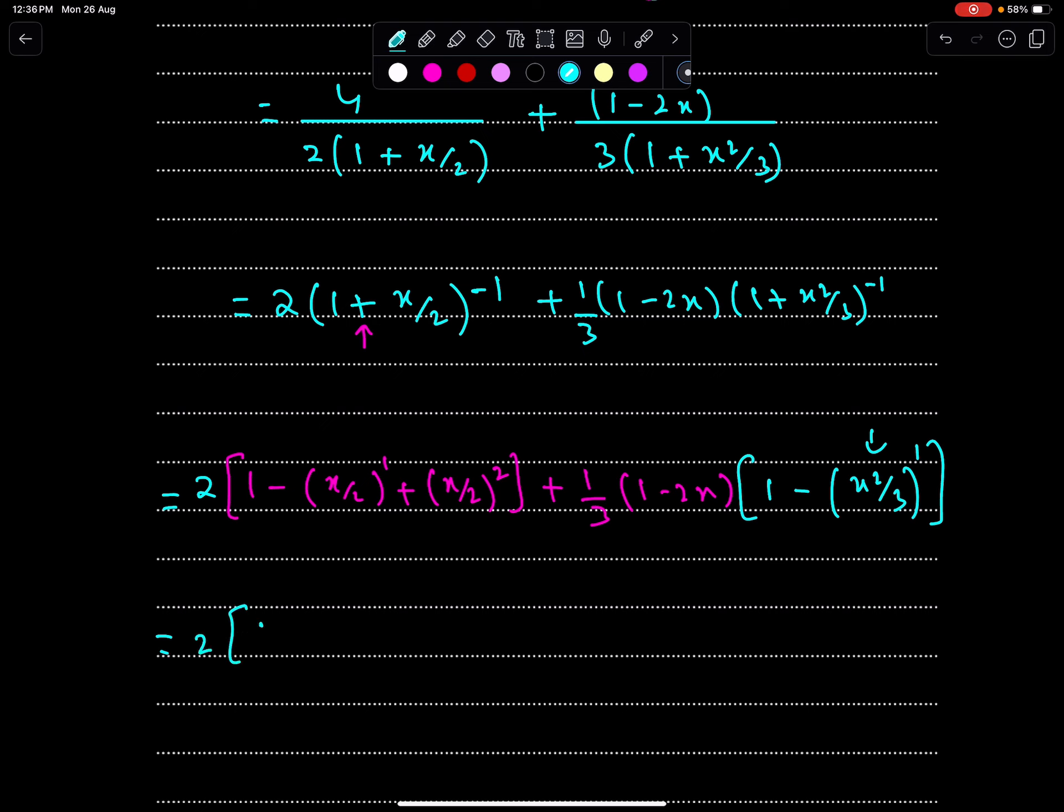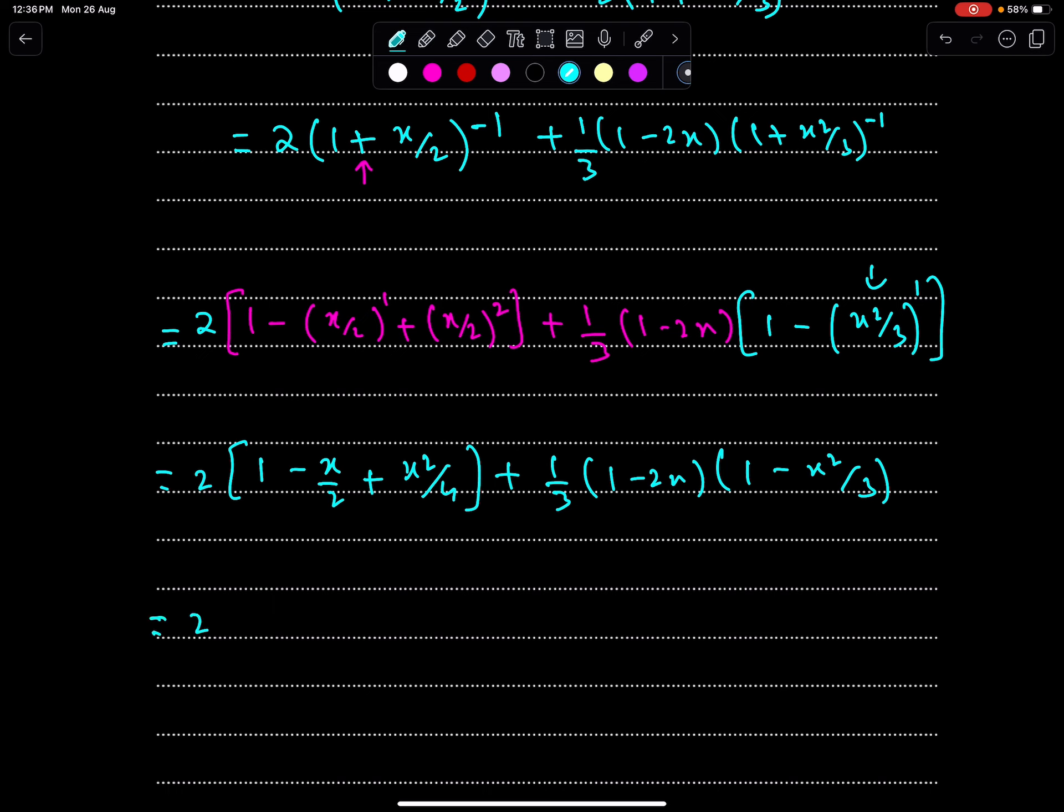So, 2, 1 minus x square upon 2, this is x square upon 4, 1 upon 3, 1 minus 2x, 1 minus x square upon 3. So, we have 2 minus x square upon 2, 1 upon 3, now multiply 1 with both. So, 1 minus x square upon 3, multiply minus 2x with 1 only, because if you will multiply this with this, you will get cube, which is not required.